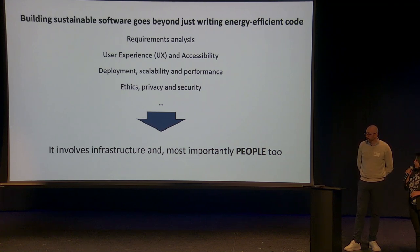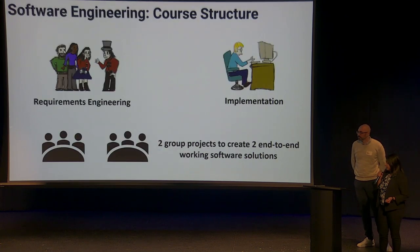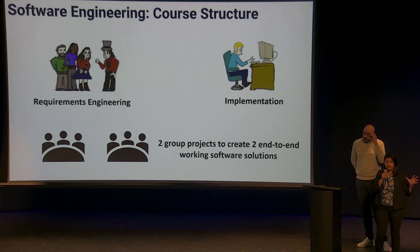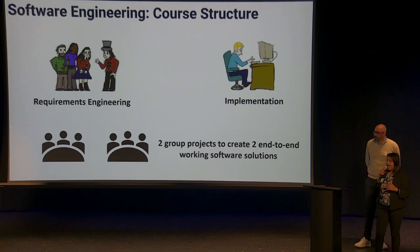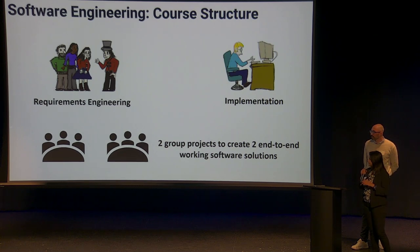The next course we are targeting for sustainability is the software engineering course. This is the core structure for software engineering, where we focus both on the requirements engineering aspect as well as the implementation aspect. Students work on two projects and create two end-to-end working software solutions as part of this course.